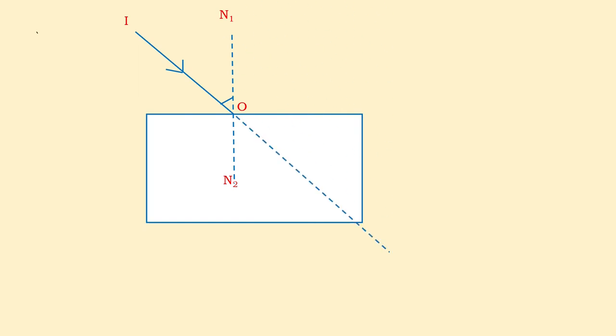Now what happens? Instead of going straight, which is shown by the dotted line, it will bend towards the normal. Because when light enters from rarer medium air to the denser medium glass slab, it always turns towards the normal. This is the law of refraction. When light enters from rarer to denser medium, it turns towards normal, and that's why it is bending towards the normal N1 N2.